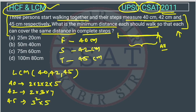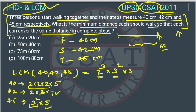To find the LCM, we take the maximum power of each prime factor. We have 2 to the power of 3, 3 to the power of 2, 5, and 7. So the LCM is 2³ × 3² × 5 × 7.